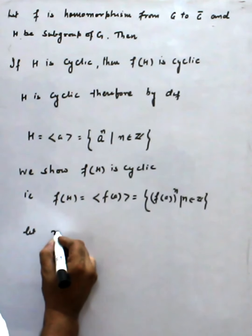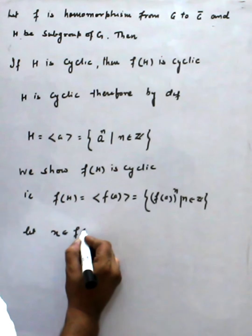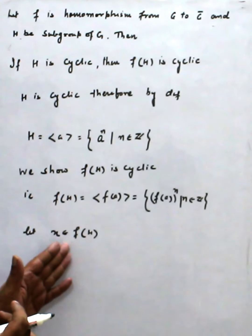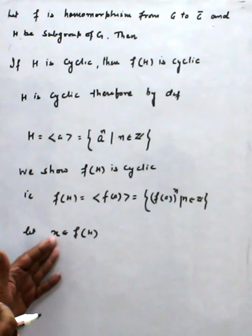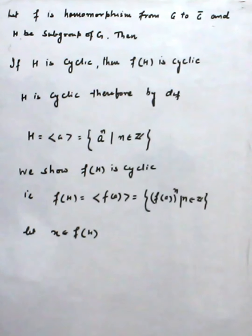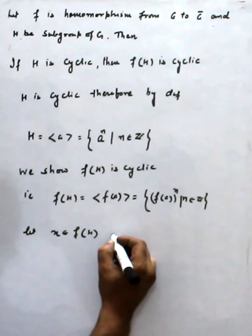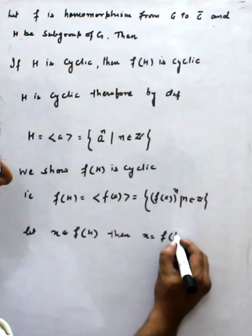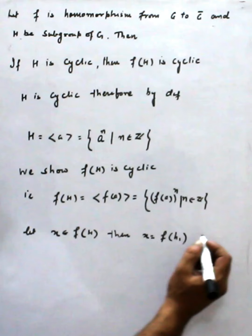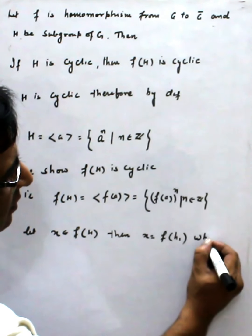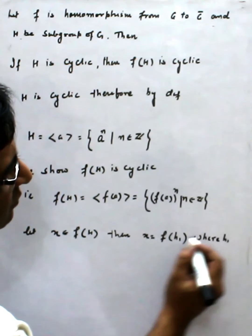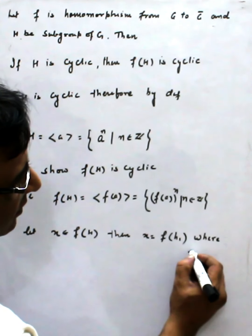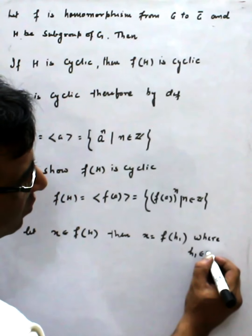So to show this, let x belong to F(H). Then what is the form of x? Obviously, x is F(h₁) where h₁ belongs to H.